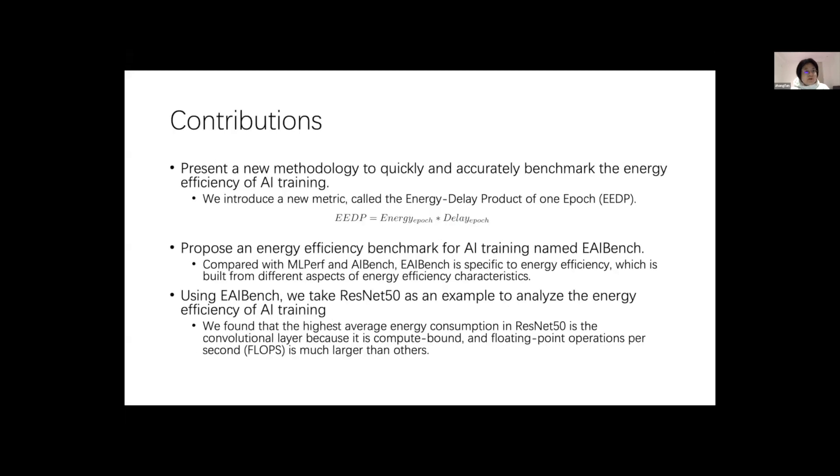For this work, first, we present a new methodology to quickly and accurately benchmark the energy efficiency of AI training, and we introduce a new metric called EEDP. EEDP is a product of energy and delay during one epoch of the training. Second, we propose an energy efficiency benchmark for AI training named EAIBench. Finally, using EAIBench, we take ResNet as an example to analyze energy efficiency of AI training.